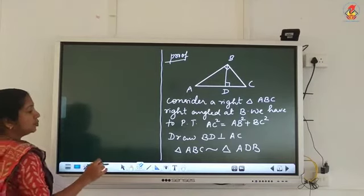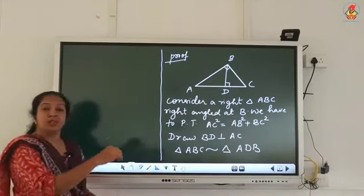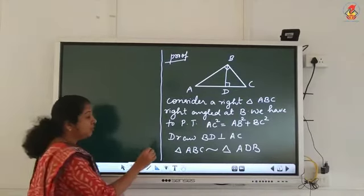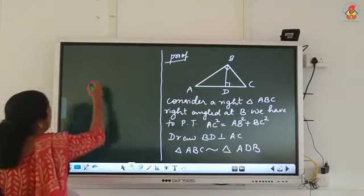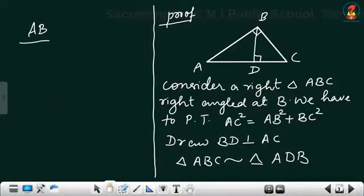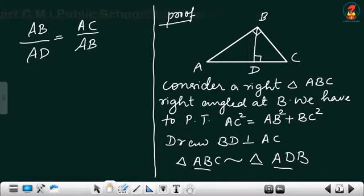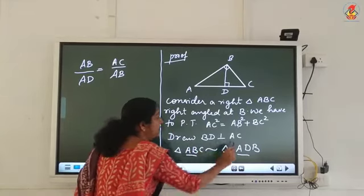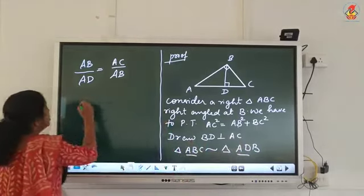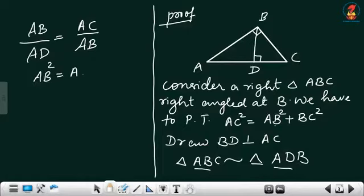Since these two triangles are similar, using the previous theorem, the corresponding sides are in proportion. So AB/AD = AC/AB. We need AB², so from AB/AD = AC/AB we can write AB² = AC × AD. That is the first equation.